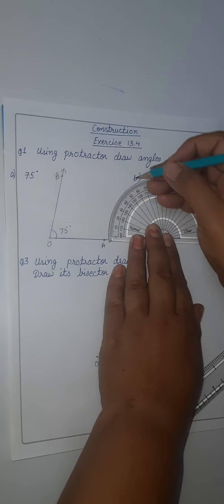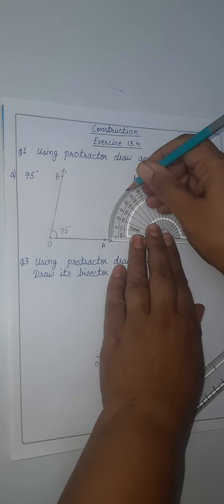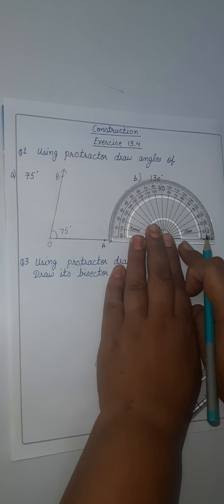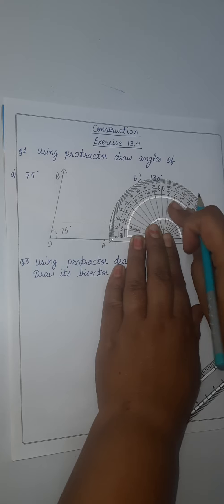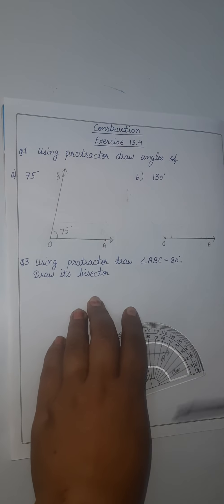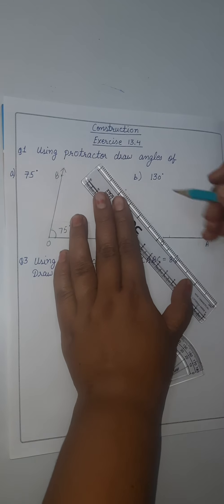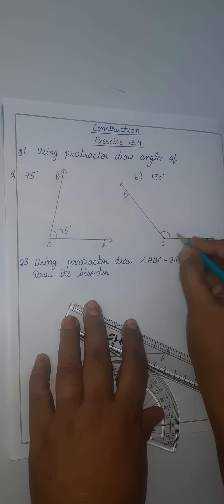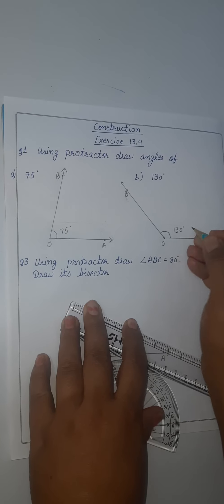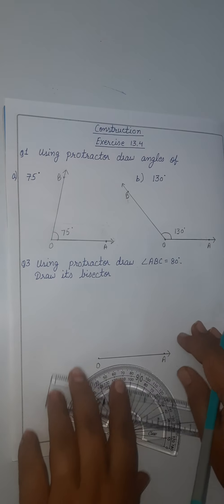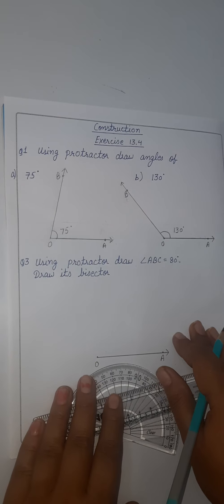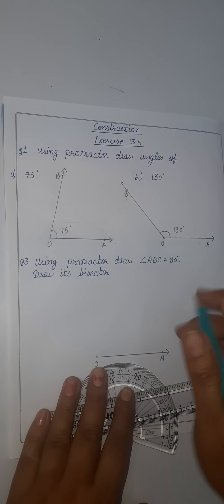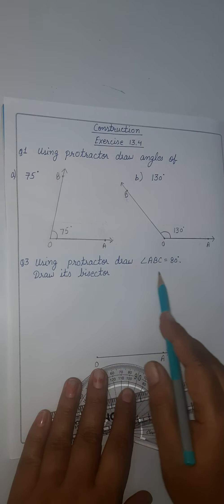Now we have to see where 130 degrees is. Here it is — 130 degrees. We will mark this with the help of the protractor and join this. This is 130 degrees drawn by using the protractor. Mark this point — this is 130 degrees. It is an obtuse angle, that means more than 90 degrees.